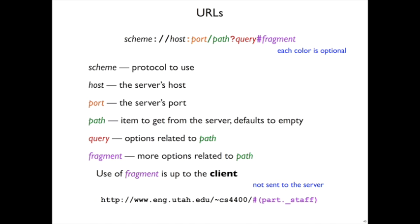Finally, there's a fragment in a URL. Unlike the path and query, the fragment is not sent to the server — its use is for the client only. For example, if you go to a URL with a hash part, that just causes the browser to scroll down to a particular part of the web page. It doesn't change what is fetched from the web server.